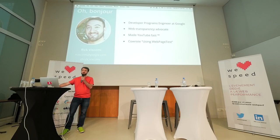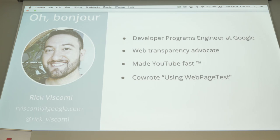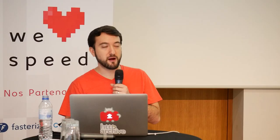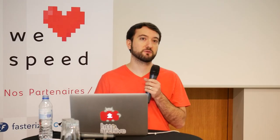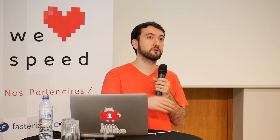My name is Rick Viscomi. I am a developer programs engineer at Google. I've been in this role for about a year and a half. My primary role as a DPE is working on web transparency — that means I work on tools like the HTTP Archive and Chrome User Experience Report to enable developers, both within Google and externally, to understand the state of the web.